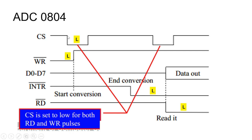Chip select should be 0 to activate the IC. While chip select is low, write is 0. Once write is 0, you can see the high-to-low transition — it is a falling edge. Once it is a falling edge, write is 0, it will start the conversion. While the conversion is starting, interrupt is 1. D0 to D7 are the data lines connected to port 1.